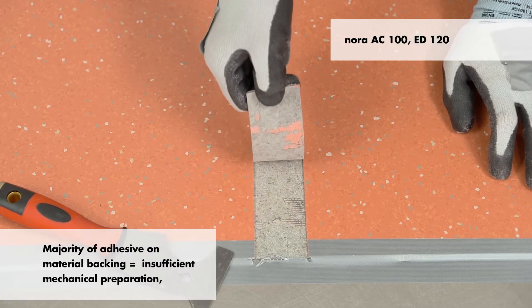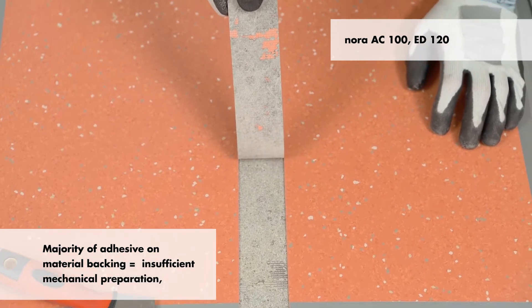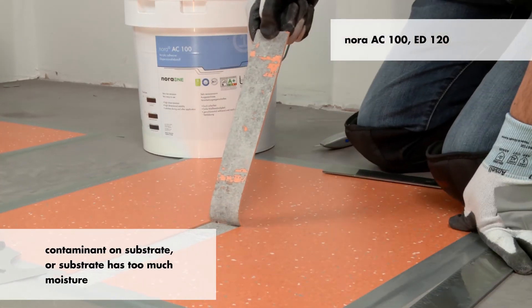If the majority of the adhesive is on the material backing, there was either insufficient mechanical preparation, a contaminant on the substrate or the substrate has too much moisture.